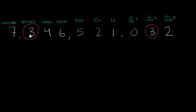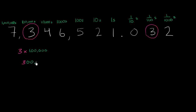And then the 7 is in the millions place. So what does this 3 represent? Well, it's in the hundred thousands place. It literally represents three hundred thousands — three hundred thousand, three followed by five zeros.